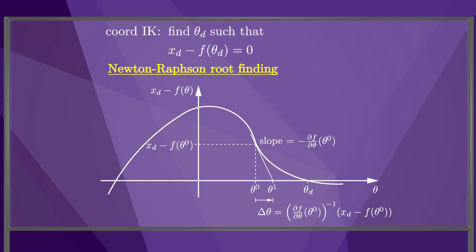If the function x-d minus f were linear, theta-1 would be an exact solution. Since it is not linear in general, theta-1 is only closer to a solution, not an exact solution.